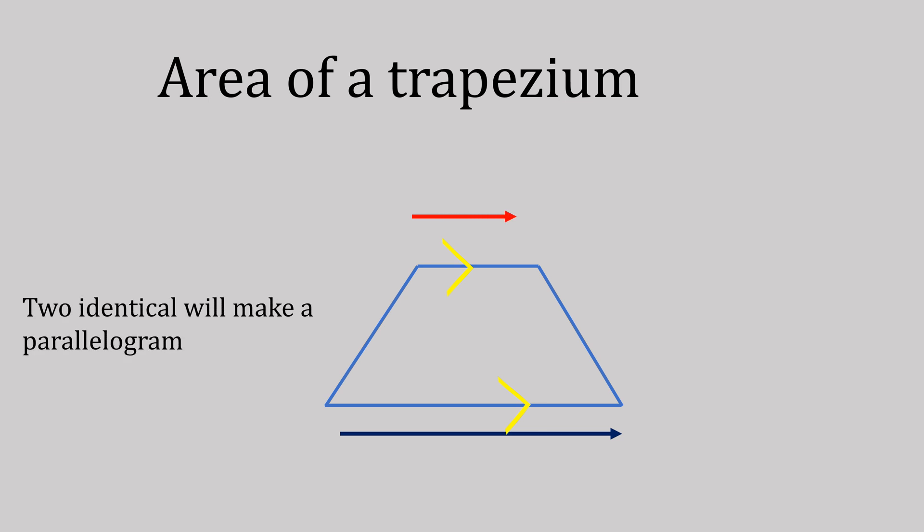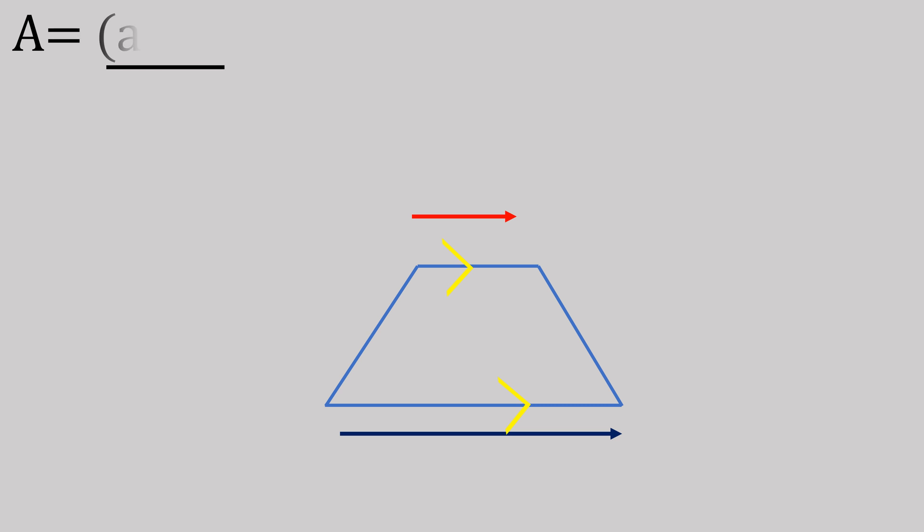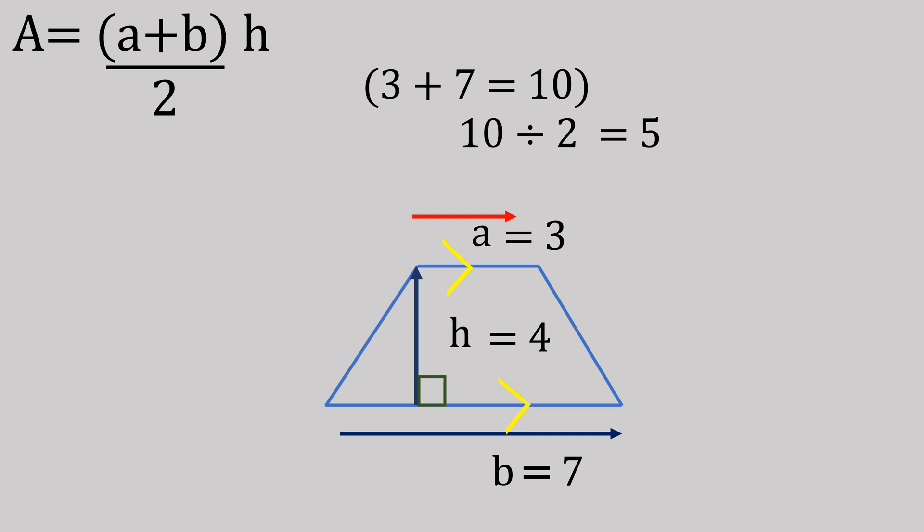For the area of a trapezium, first mark on our parallel lines to show our bases, a and b. If we had two identical trapeziums they would make a parallelogram. So A equals (a plus b) divided by 2 times h. That's our formula. So a plus b is 3 plus 7, which gives us 10. Ten divided by 2 gives us 5, times the height which is 4. Five times 4 gives us 20 centimeters squared because this is area.